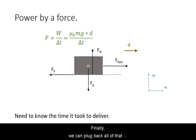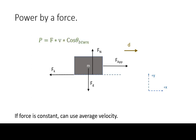Finally, we can plug all of that expression back into the formula for power. Take note that displacement over time is also the average velocity. Hence, an alternate way of calculating power by a force is the magnitude of that force times the average velocity of the object times the cosine of the angle between them.